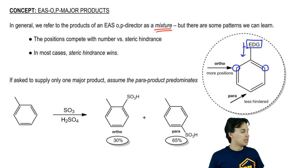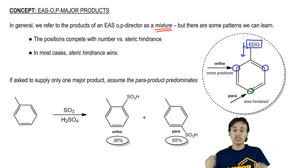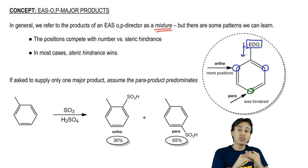There's two times as many positions. On the other hand, the para position also has an advantage, which is that the para position is usually the one that's less hindered because it's furthest away from the donating group.